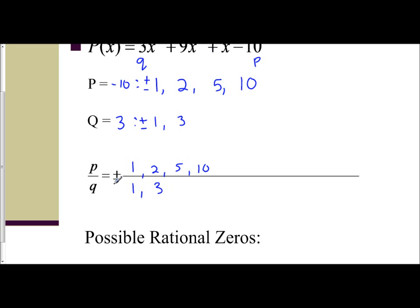Here's my plus or minus already accounted for. So the easiest way to do this is to take every P value divided by every Q value. And we do it, each Q value, one at a time. So take 1, divide by 1. We have the plus or minus. 1 divided by 1 is 1. 2 divided by 1 is 2. 5 divided by 1 is 5. 10 divided by 1 is 10. So 1, 2, 5, and 10, the positive of each of those.